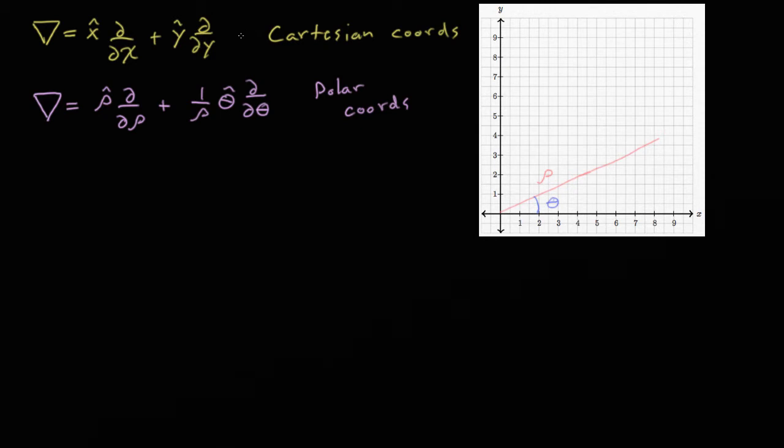And if we were in more than two dimensions, there would be a z term, an identical looking term except with z in it, and you could even go more if you wanted. But in Cartesian coordinates, every term is completely independent, which is nice.